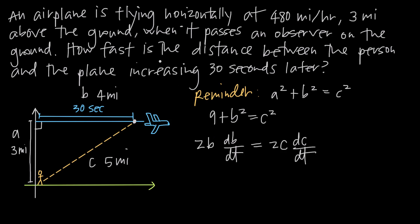Going back to the problem: we've been asked how fast is the distance between the person and the plane increasing. The distance is C, and the rate at which C is changing is dC/dt. We need to solve for dC/dt, which means plugging in for all other variables: B, dB/dt, and C. We're interested in the rate of change at 30 seconds after the plane passes the person. At that time, B is 4 miles, so we can plug in B equals 4 miles.